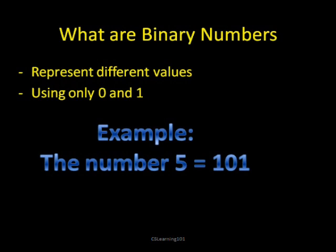Like I said, they can represent different values even though they can only use 0 and 1 — they can still represent as many numbers as regular numbers do. For example, the number 5 would be represented by 1, 0, 1.